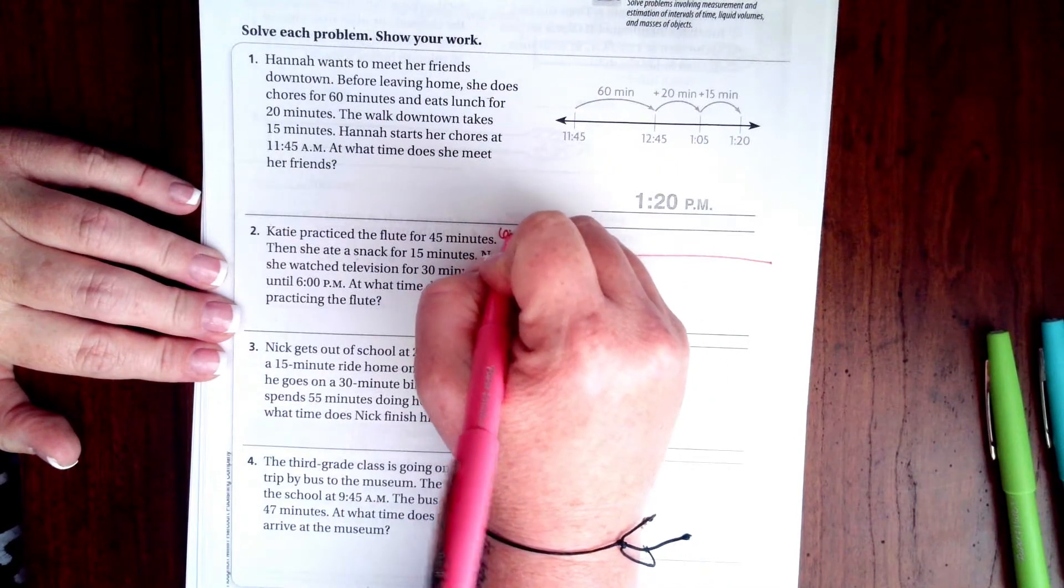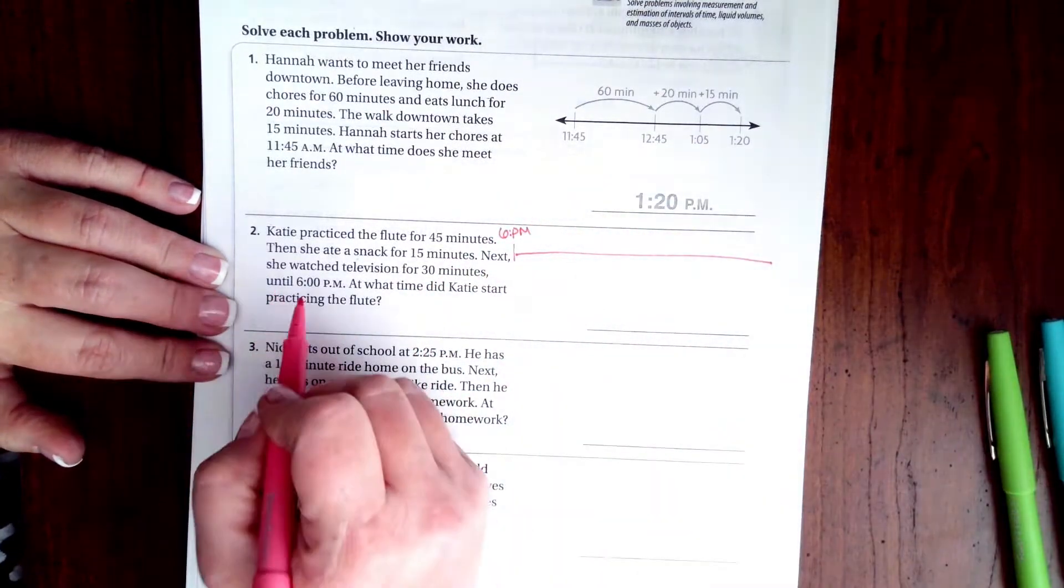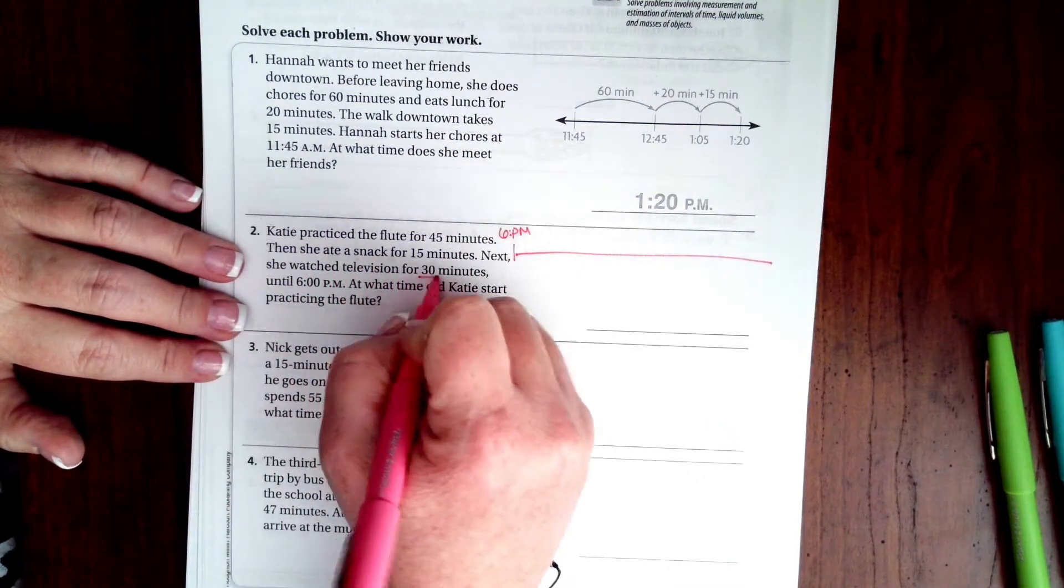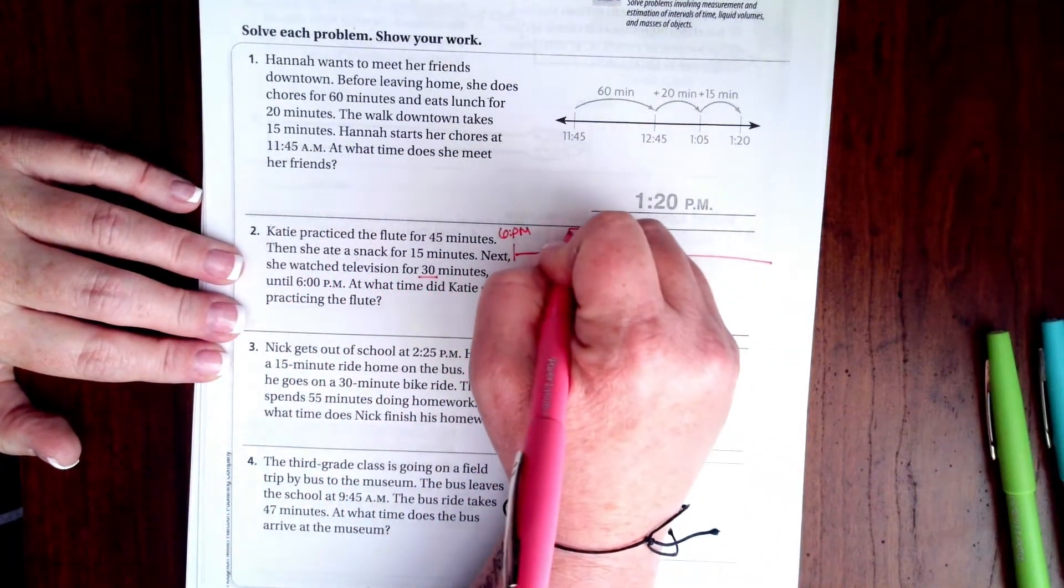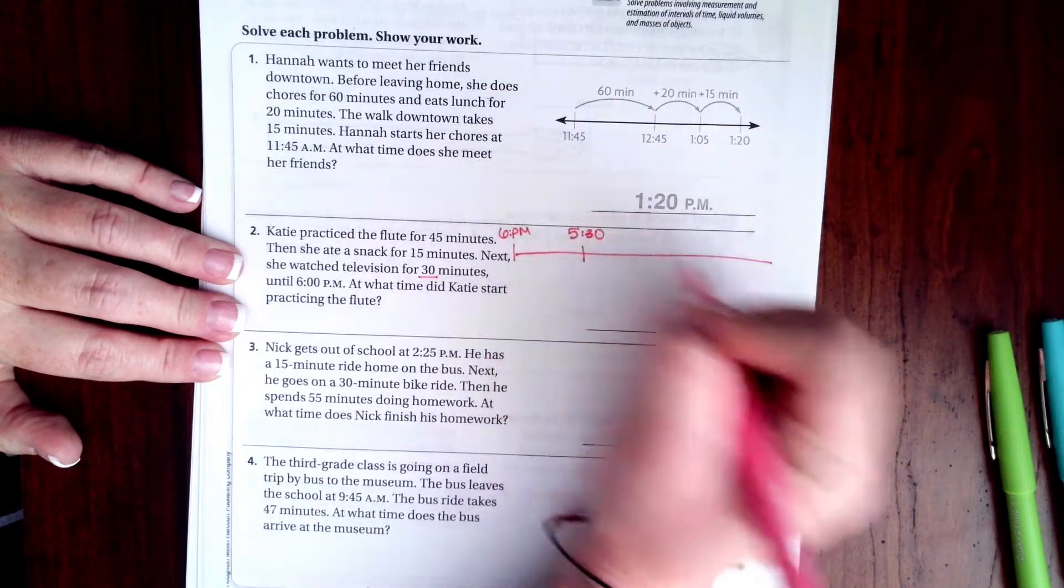We're gonna start at 6 PM. Now she watched television for 30 minutes. 30 minutes back would get us to 5:30, so that's our TV time.